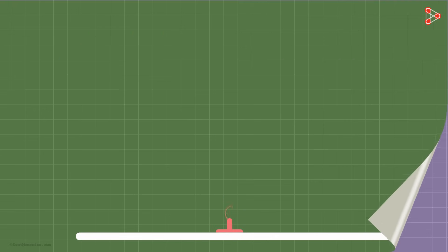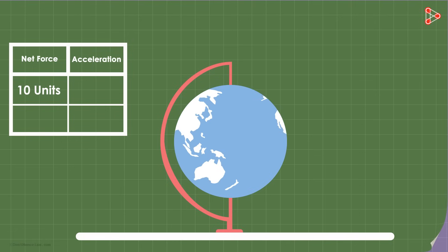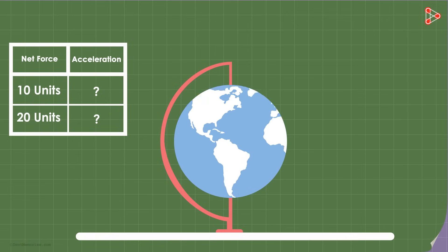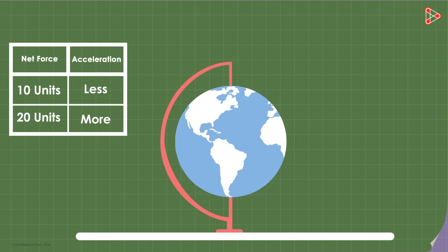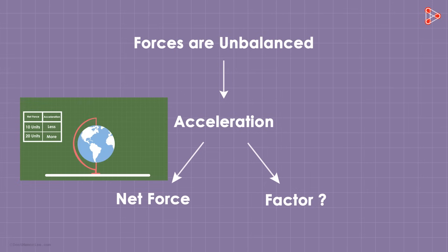Okay, let's say there's an object on a table. You apply a net force of 10 units on it, and then you apply a net force of 20 units on it. In which case do you think the acceleration will be more? Of course the one in which the force was more. So we can say that one of the things the acceleration depends on is net force. If it's more, then more will be the acceleration. If it's less, then lesser will be the acceleration. Acceleration depends directly on the net force.